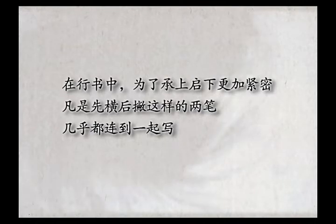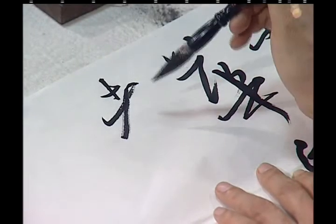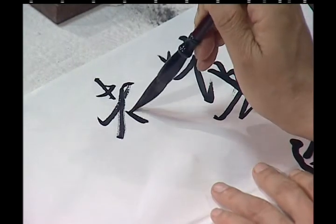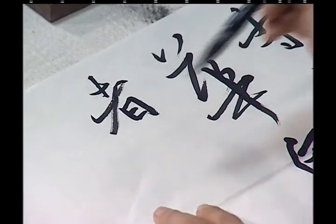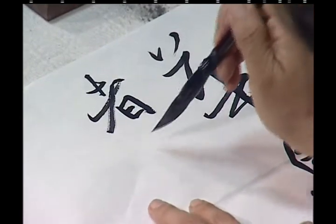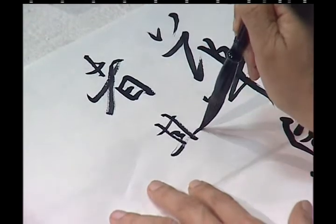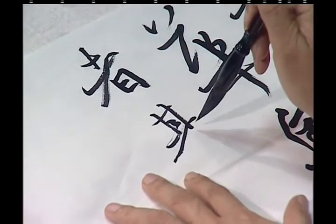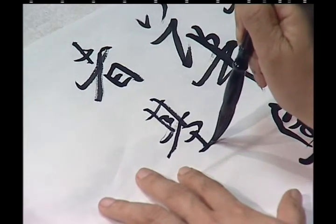凡是先横后撇的这样的两笔，几乎都连在一起写。比如说我们前面写到的这个横和折横和撇，直接连在一起写。还有很多了这种字非常多，先这个看也是直接，横和撇联系在一起。